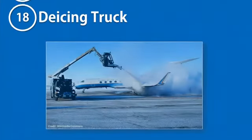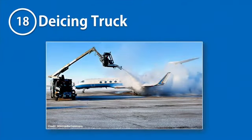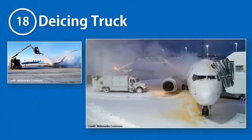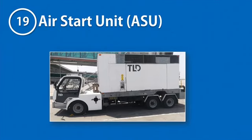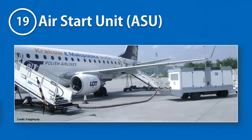A de-icing truck is an important ground support equipment used for spraying de-icing and anti-icing fluids over aircrafts operating at extremely cold airports. The ground support equipment that generally operates at the very end of the ramp operations is an air start unit, or simply an ASU. It is a high-pressure air compressor used for pneumatically kick-starting an aircraft jet engine.